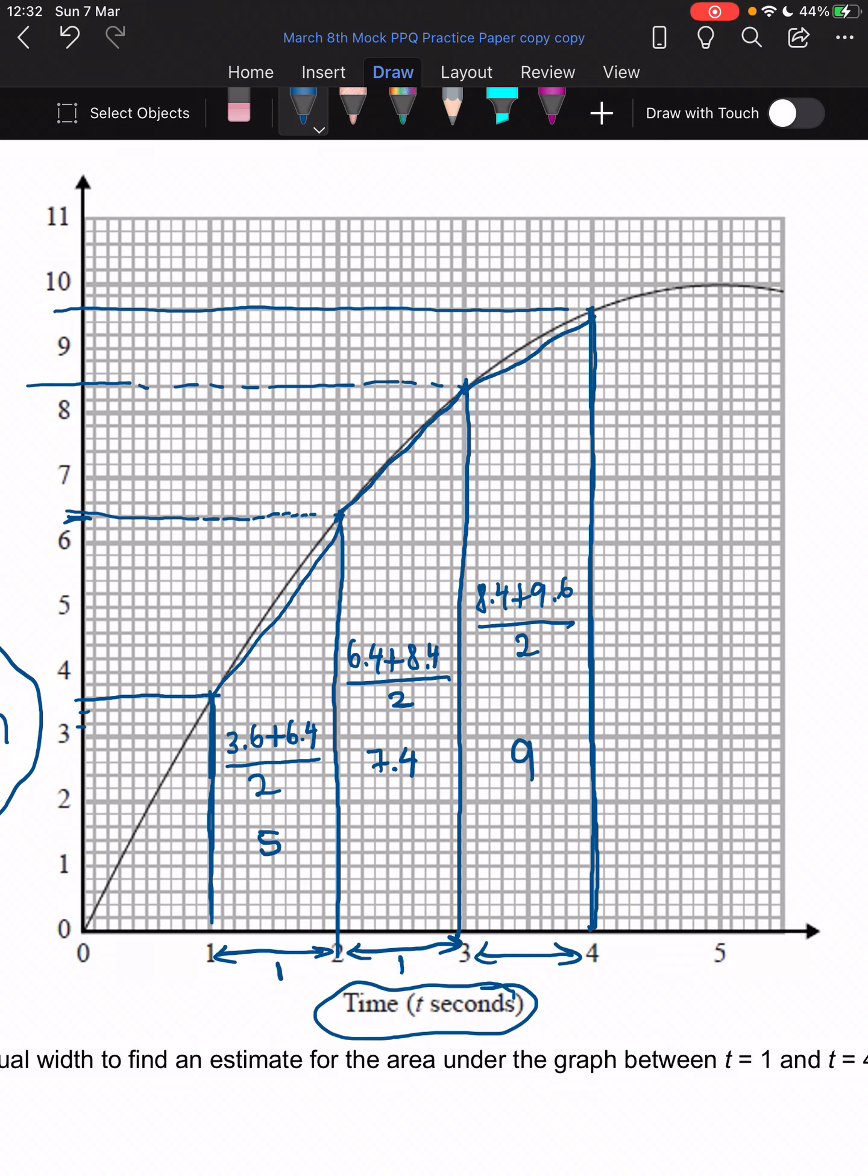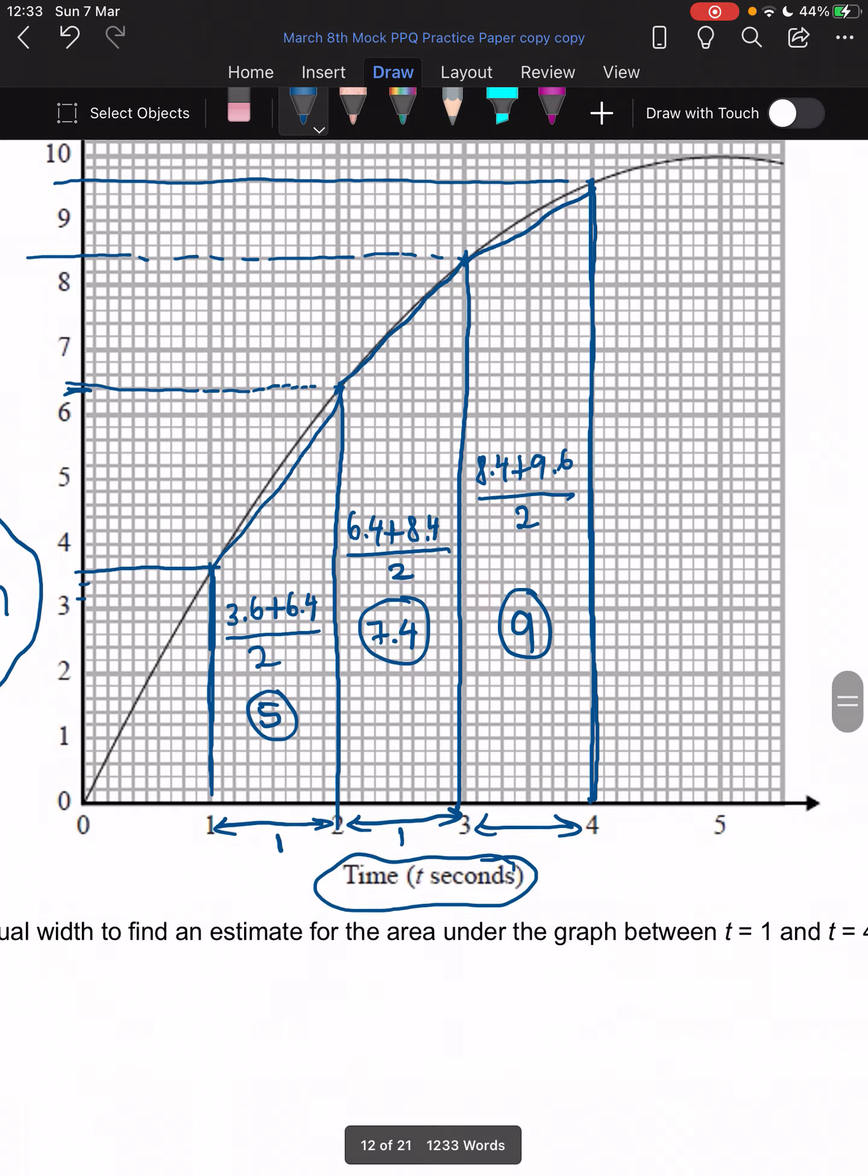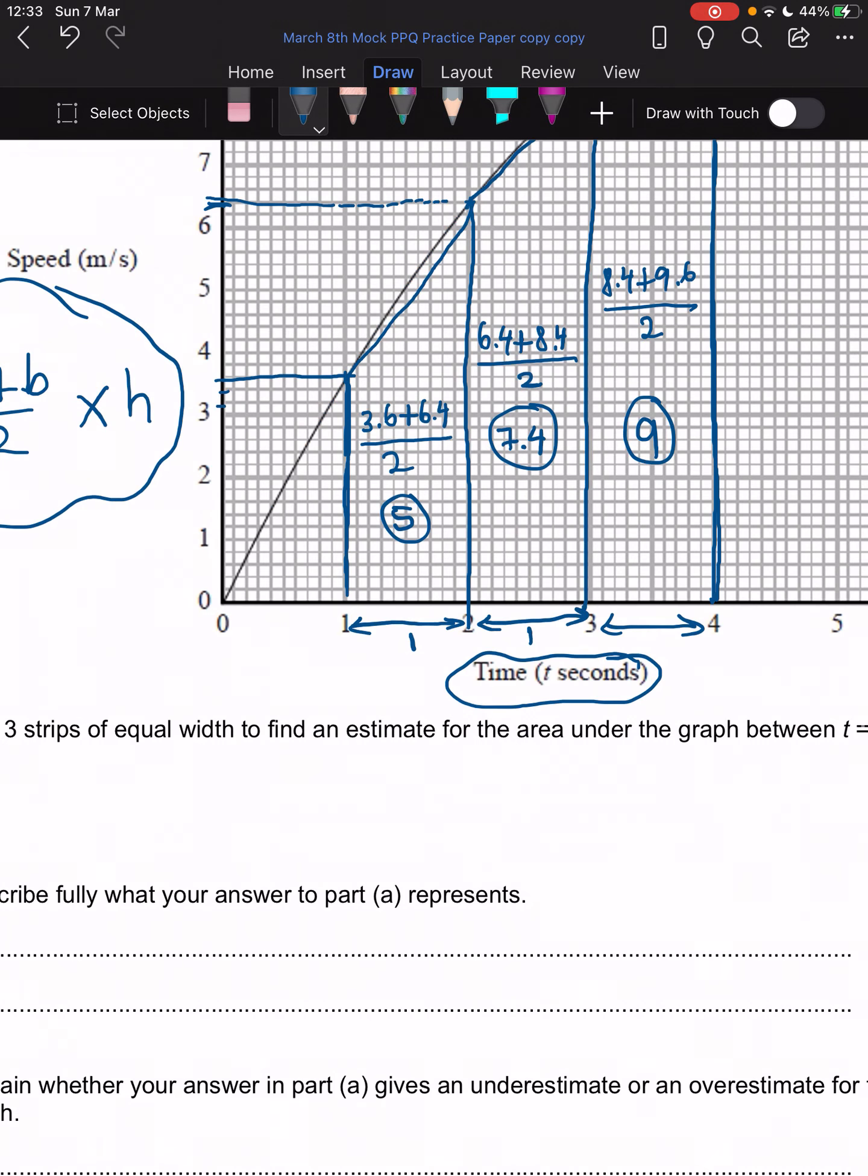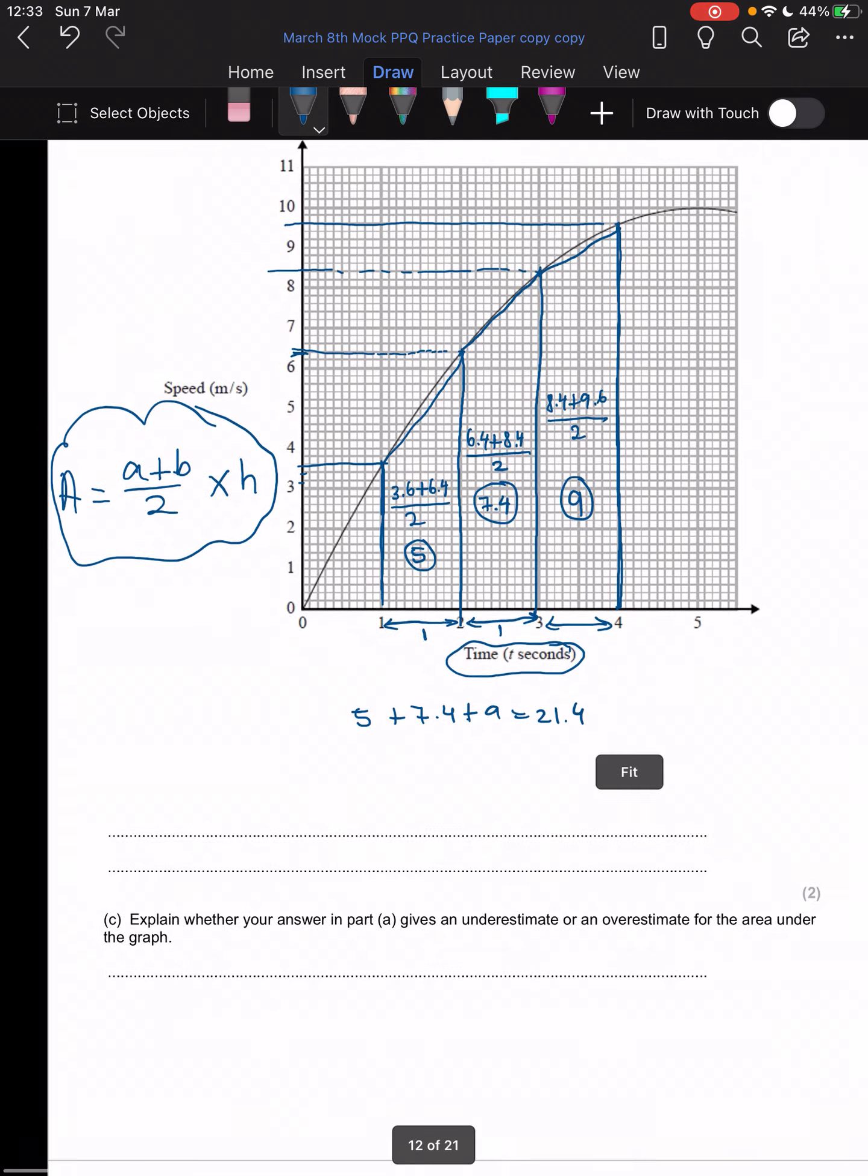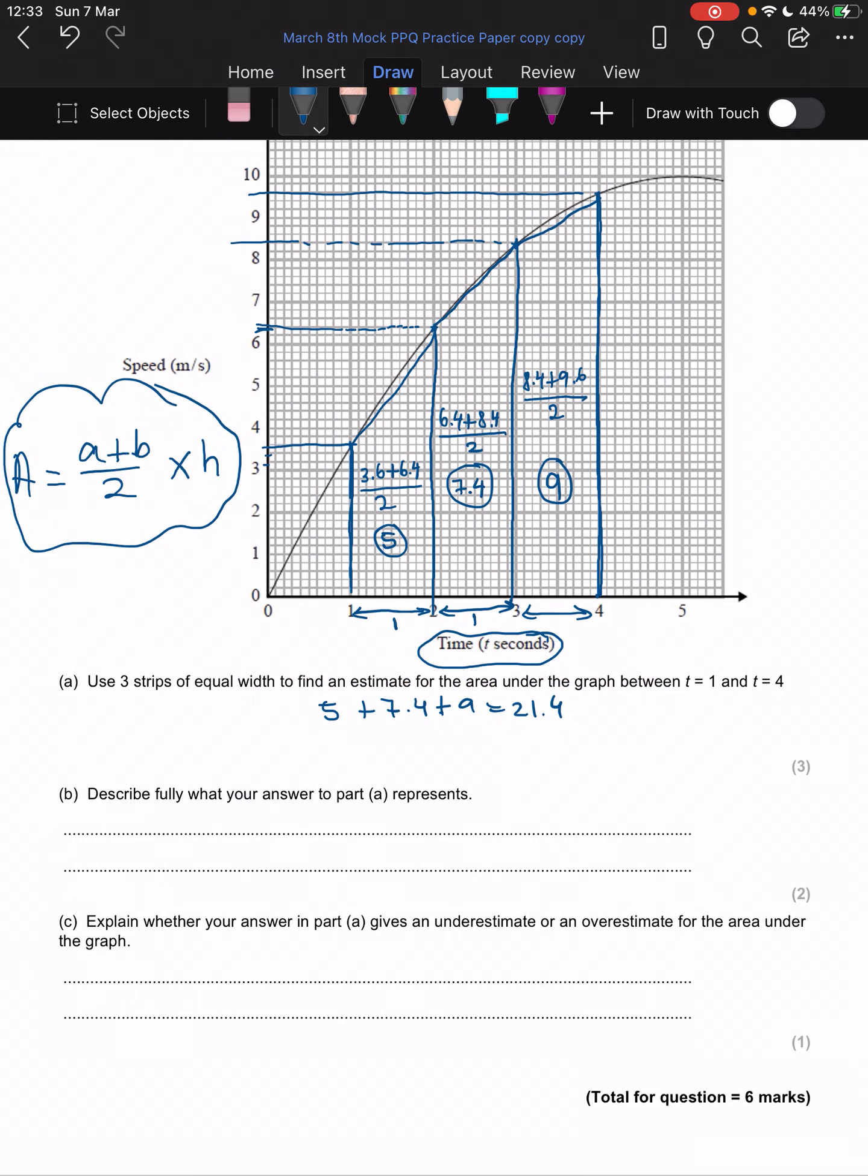Okay cool, so 5 plus 7.4 plus 9. I'm getting 21.4 vibes, but again I'm doing that in my calculator. So 7.4... yeah it's 21.4, I've still got this. So all I've done is I've added these up: 5 plus 7.4 plus 9 equals 21.4. And I'm done, that is my answer.